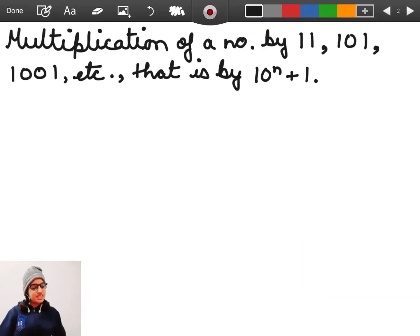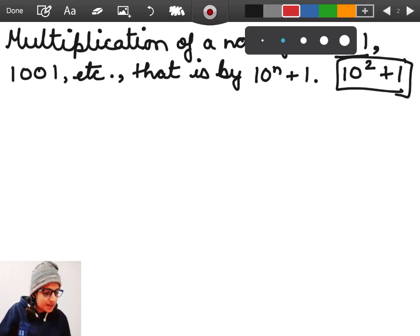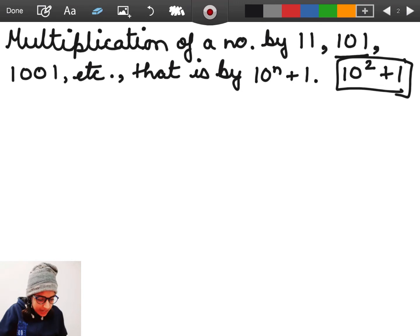Here we are learning multiplication of a number by 10 raised to the power n plus 1. For example, here we have 101. It is 10 raised to the power 2 plus 1. So let us take an example and learn this trick. Let us take an example of 4782 and we have to multiply it by 101.